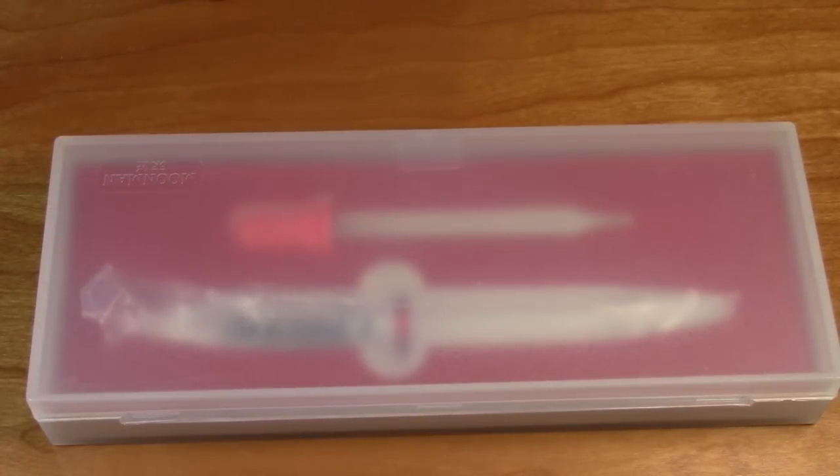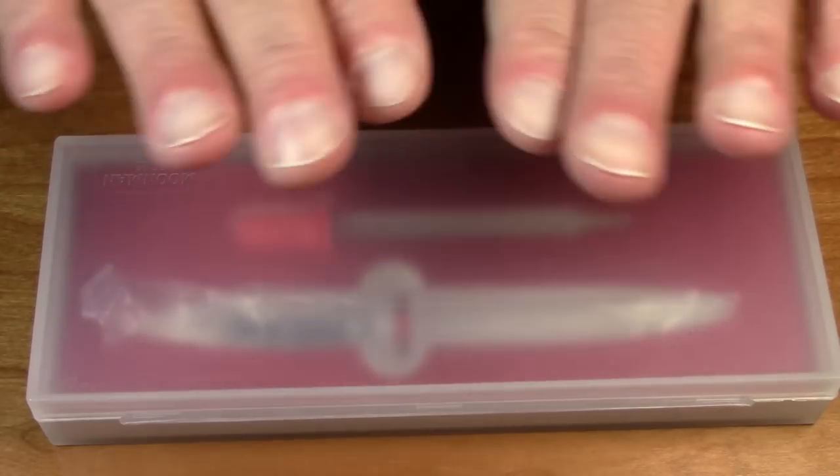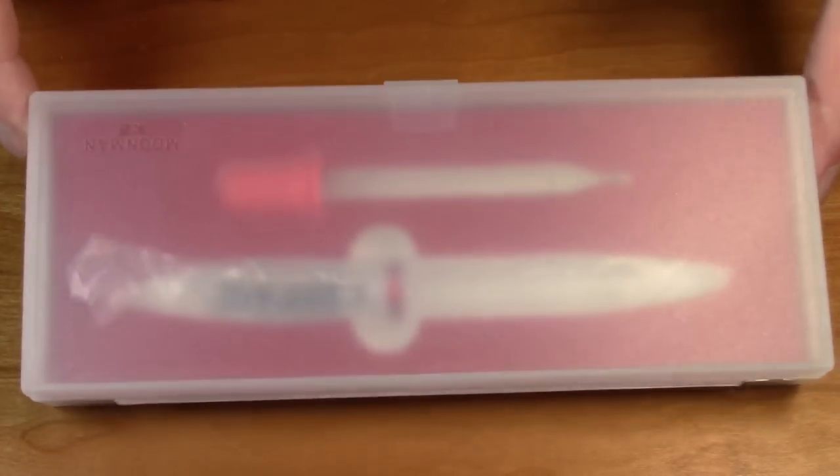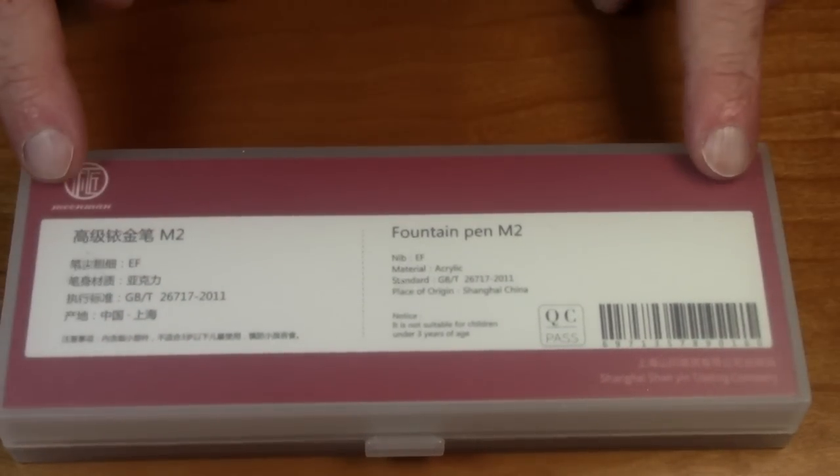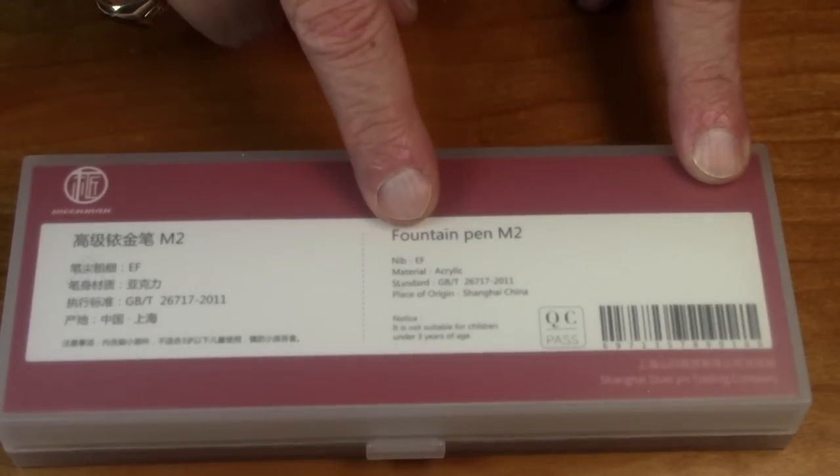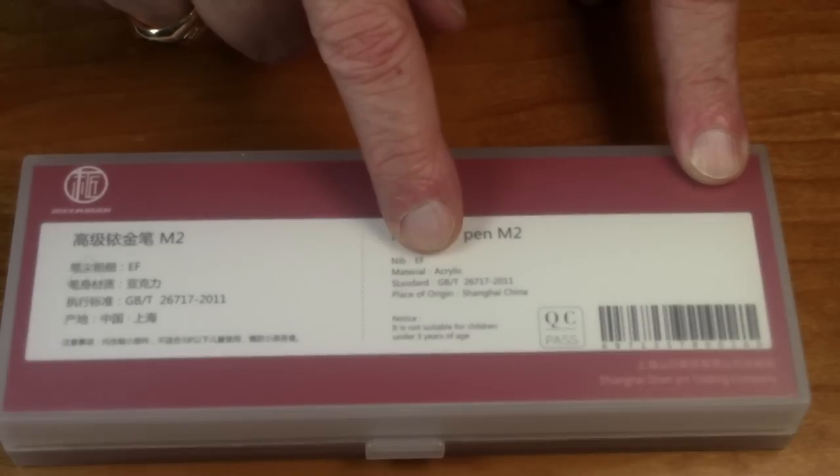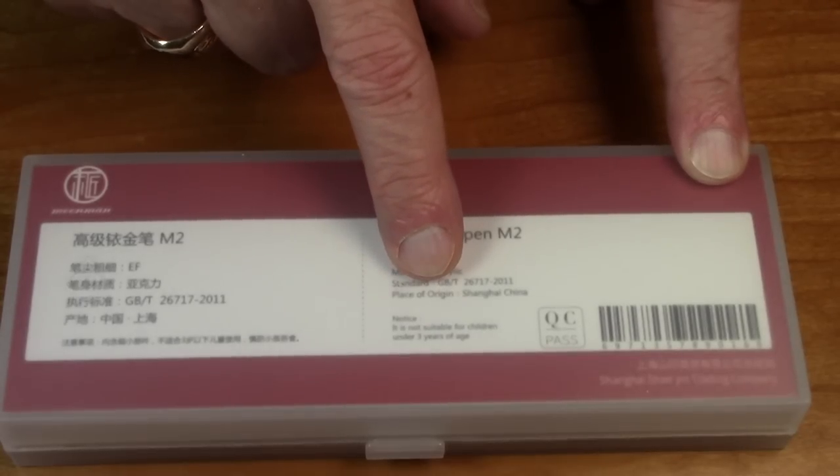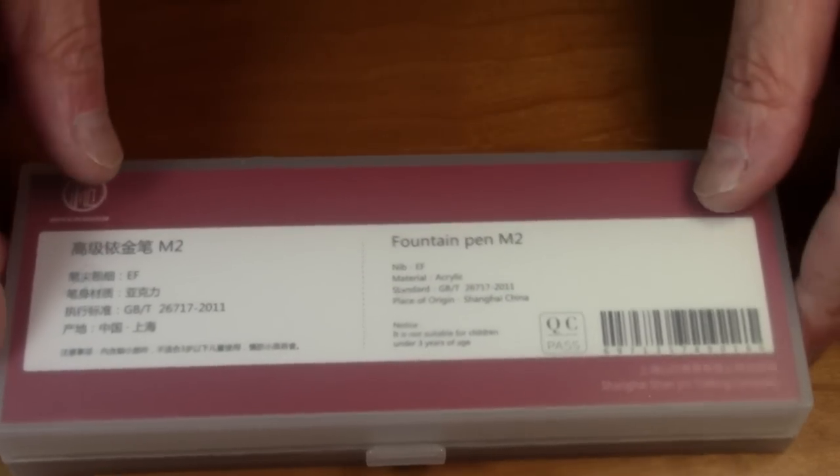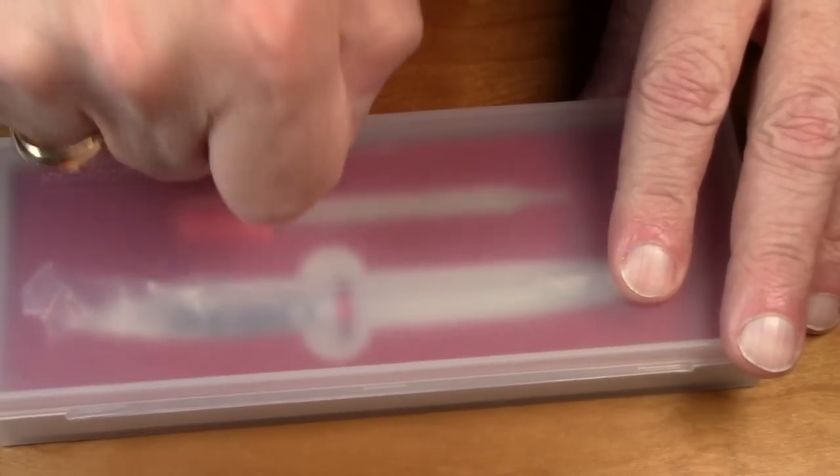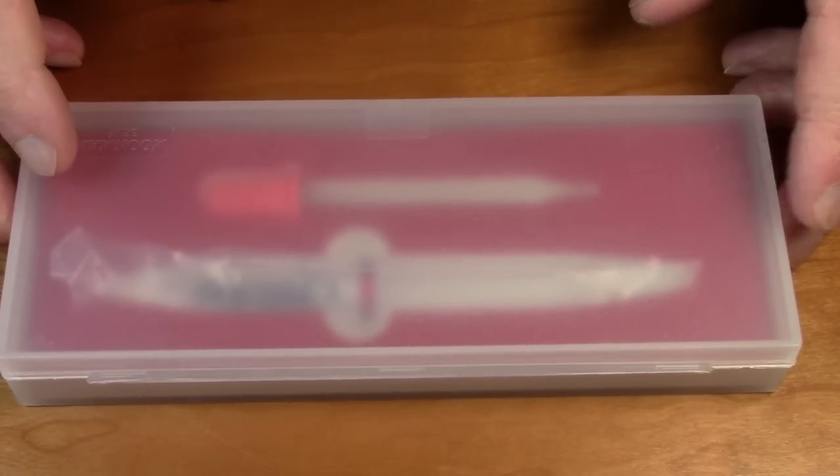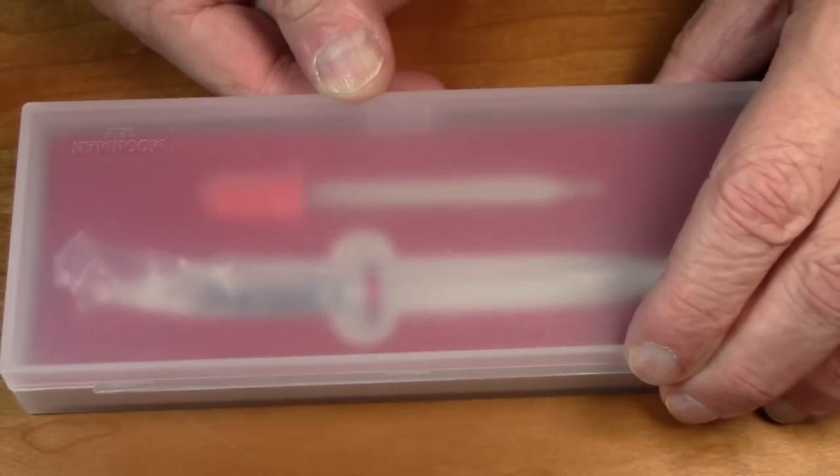Okay, we're doing another one of these on-the-fly unboxing videos where you'll see me unbox and use this pen for the first time. This pen is a Moon Man model M2. It comes in this nice box. It says nib extra fine, material acrylic, place of origin Shanghai, China. Nice sturdy plastic box, so let's just open this.